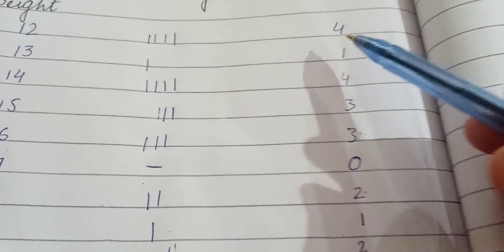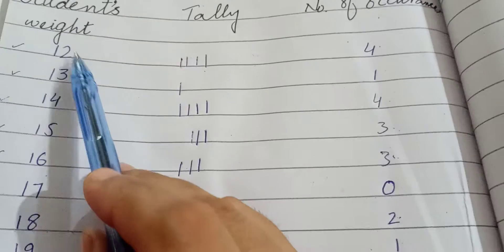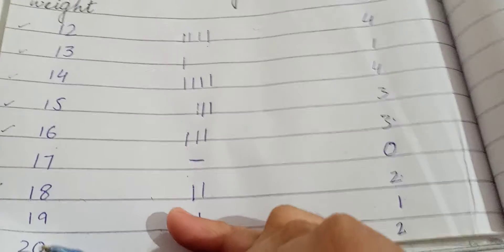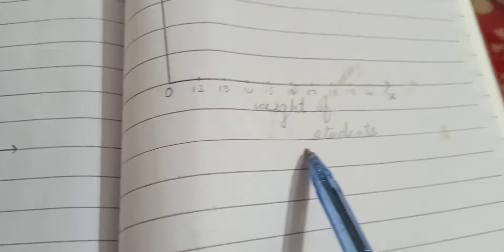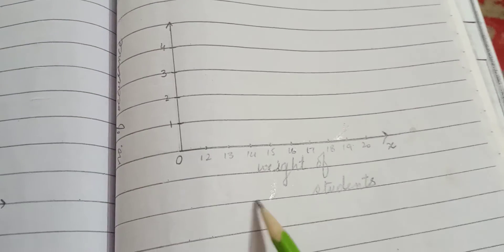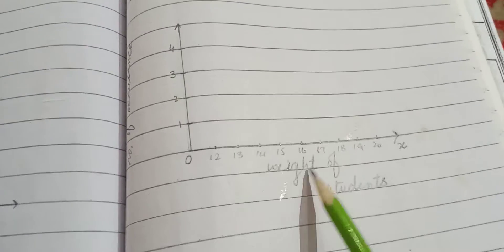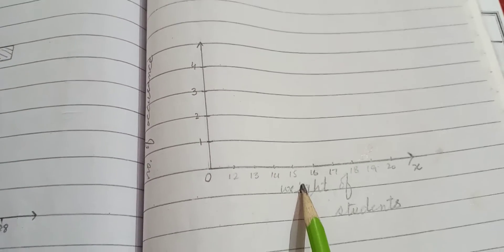The least number is 0 and the highest number is 4. Here, the least number is 12 and the highest number is 20. We will represent the number of occurrences in x-axis. We have done the number of occurrences.